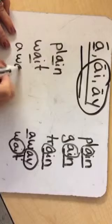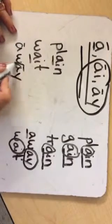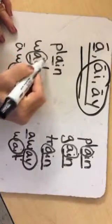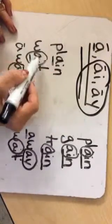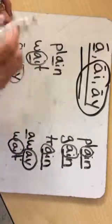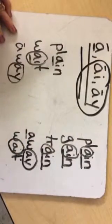And if I have away, then they're all making what long A sound? All of them are making long A sound because they all have either A, AY, or AI in them. Plain, wait, away. They all have the same long A sound.